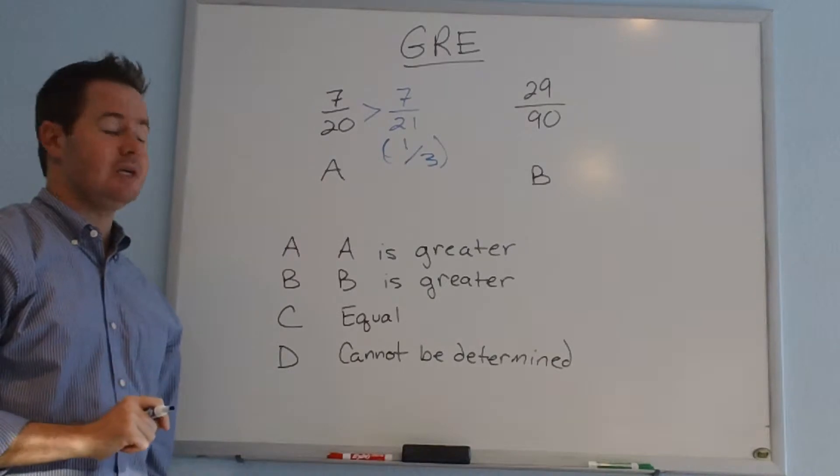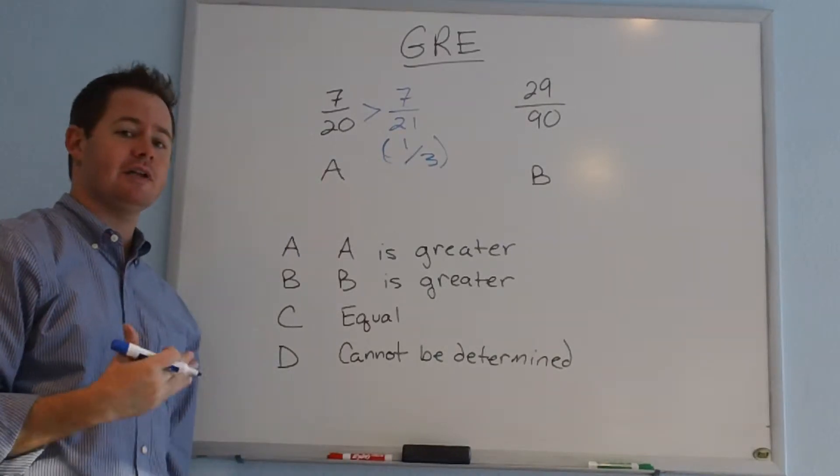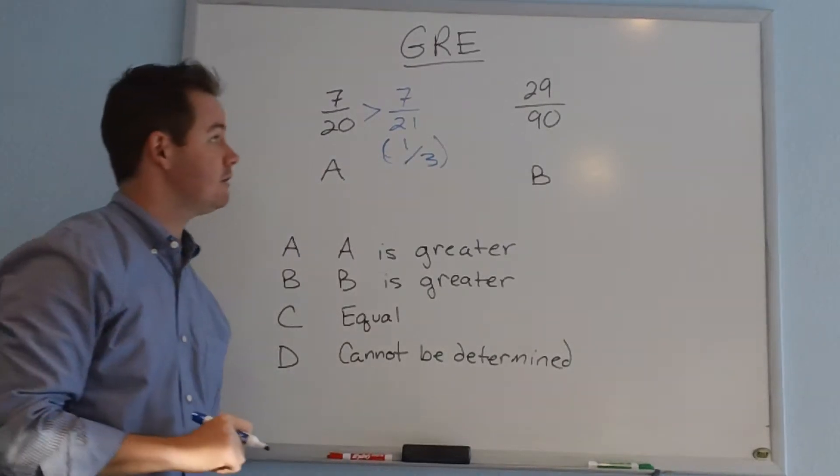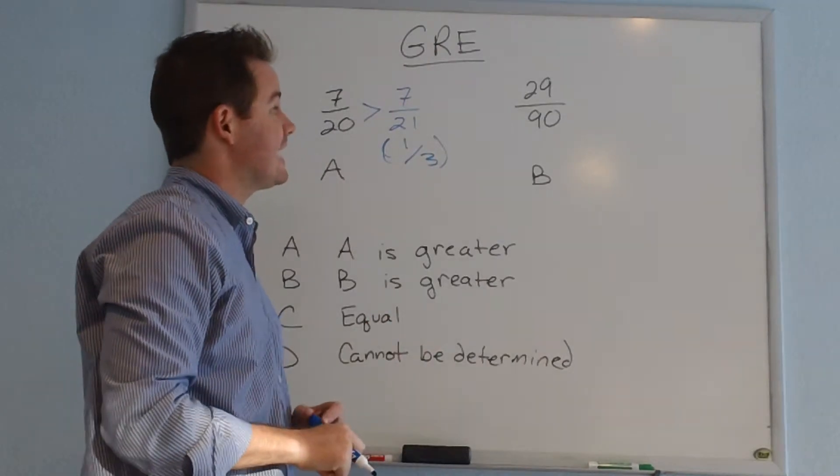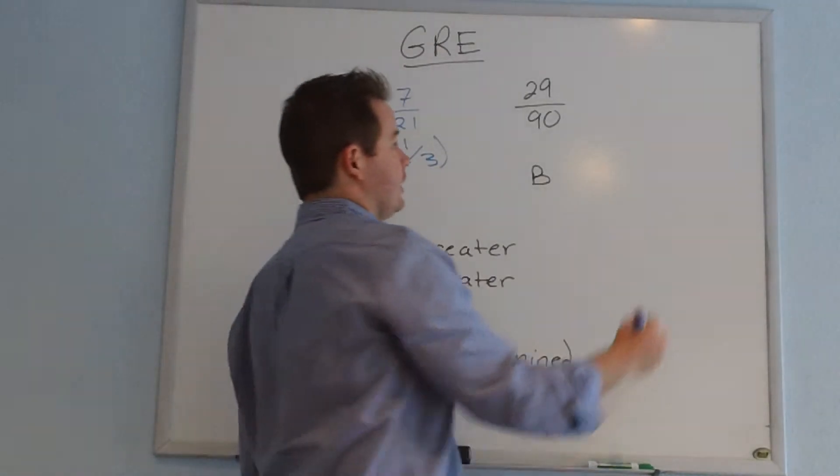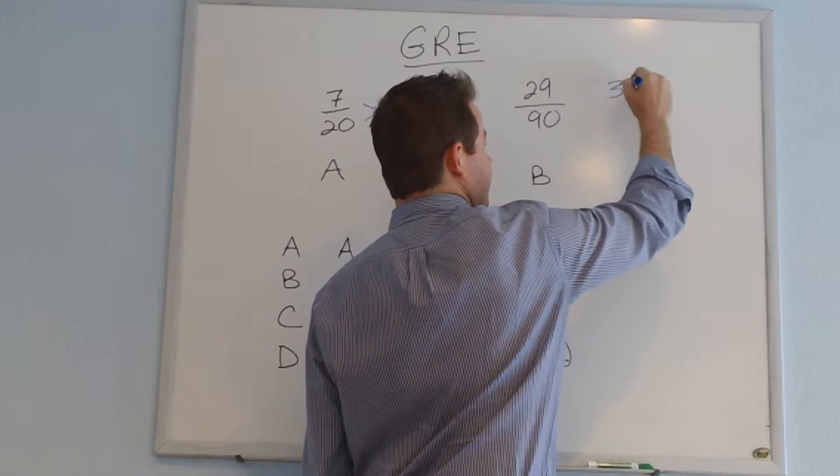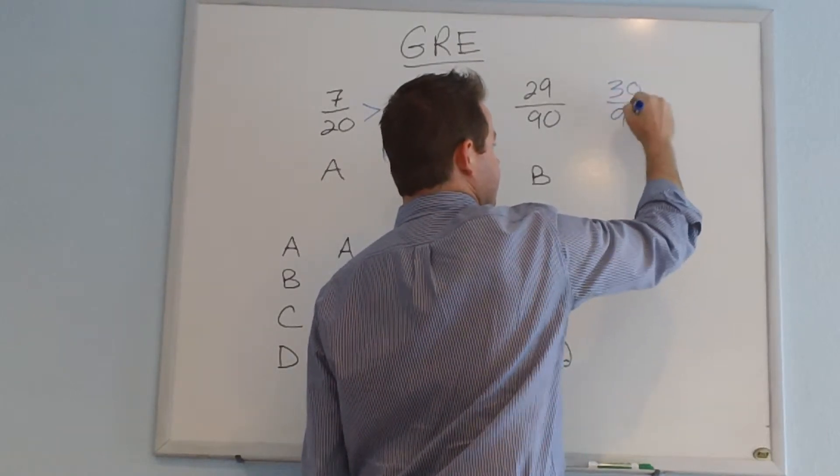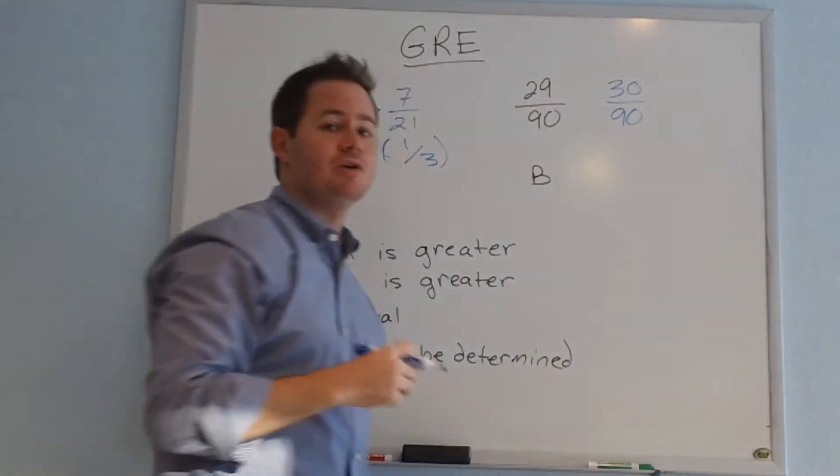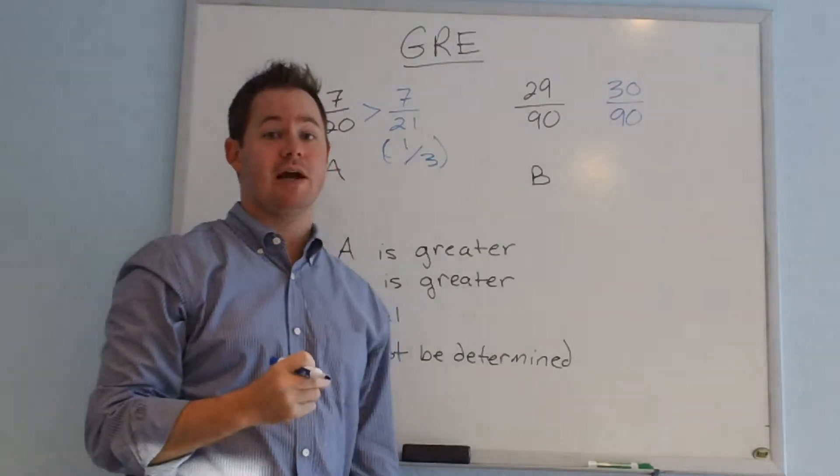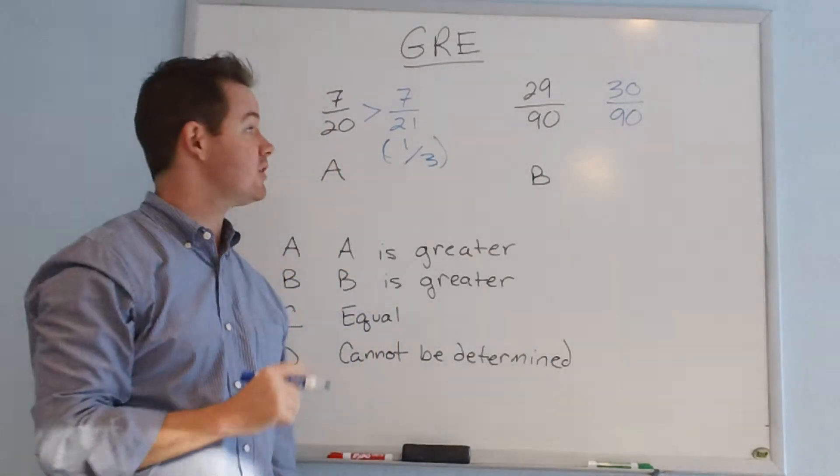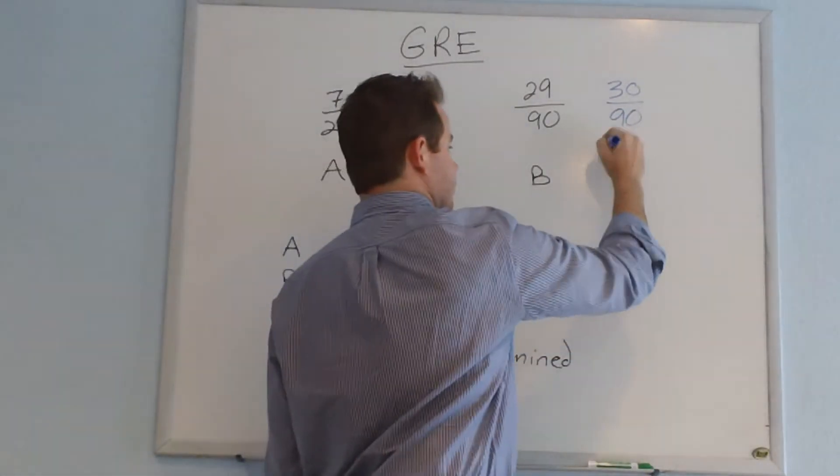Let's see if we can take that reference value and find a similar comparison for column B. 29 over 90 is very close to 30 over 90. And the reason 30 over 90 is an important fraction to see here is because that is also 1 third.